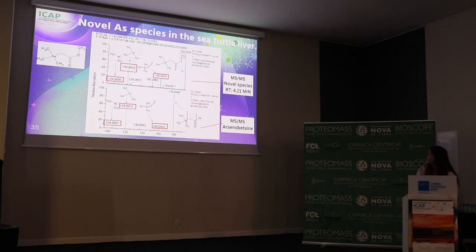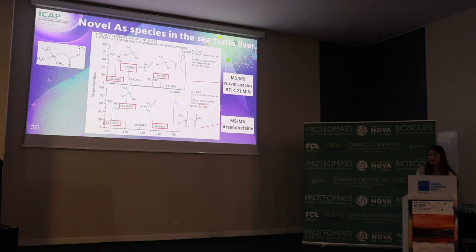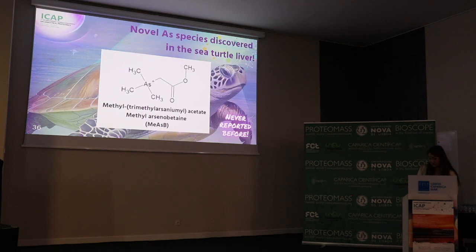We proposed a novel structure for this organoarsenic species. It is very similar to arsenobetaine — the main organoarsenic species found in marine animals — but with a different mass-to-charge ratio due to a methyl radical. We proposed this structure for this novel arsenic species, which has never been reported before in the literature.